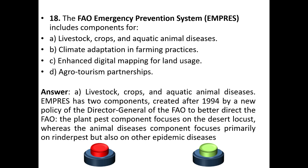The FAO EMPRES has two components created after 1994 by a new policy of the Director General of FAO to better direct FAO resources. The plant pest component focuses on the desert locust, whereas the animal diseases component focuses primarily on transboundary pests but also on other epidemic diseases.